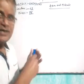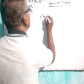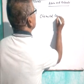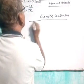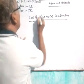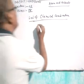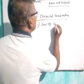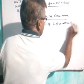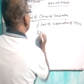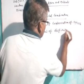But in class 9th, you will read only two laws of chemical combination. The first is the Law of Conservation of Mass, and the second is the Law of Definite Proportion.